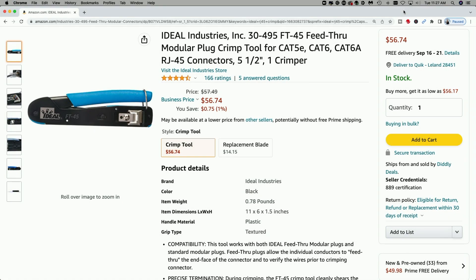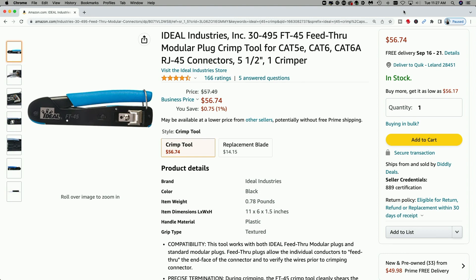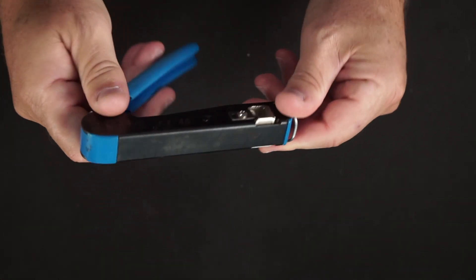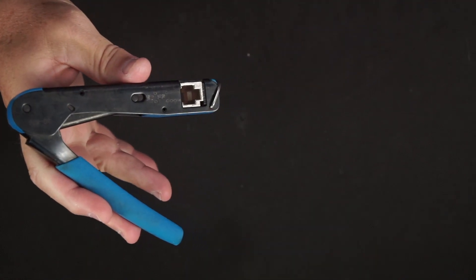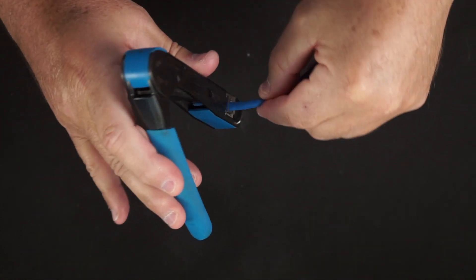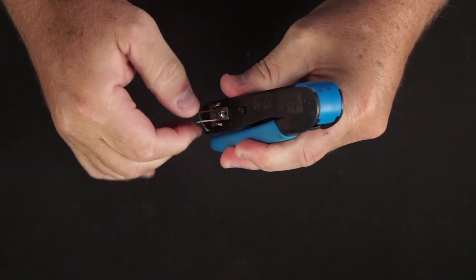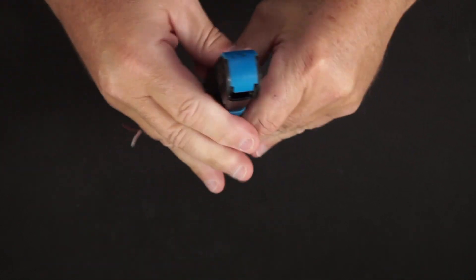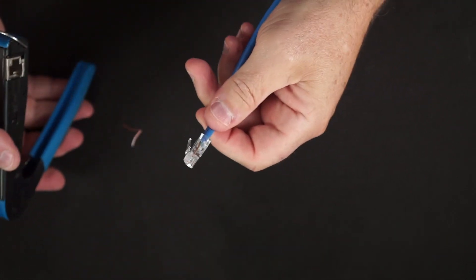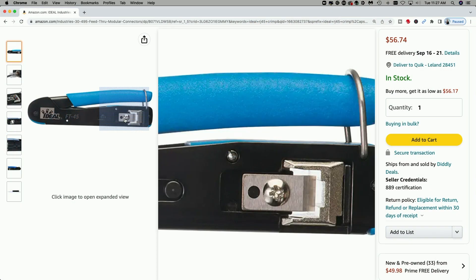Coming in at number two, one of my favorite tools is the Ideal Industries RJ45 pass-through crimper at $56.74. This tool is definitely awesome. It helps speed up the crimping process and reduces the number of bad terminations. And one thing I really like about this tool, as you can see here, the blade is actually replaceable if it dulls.